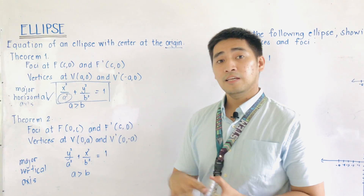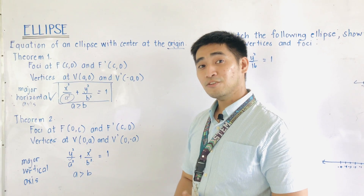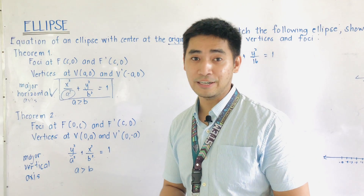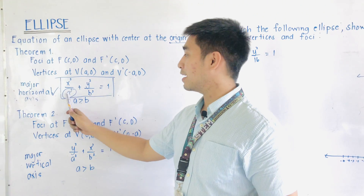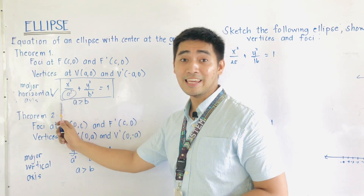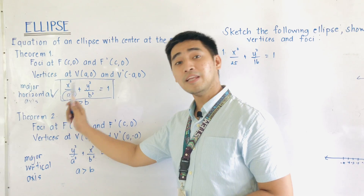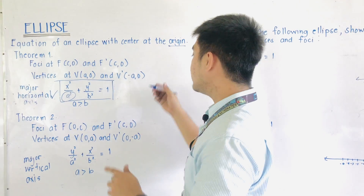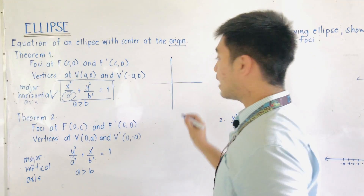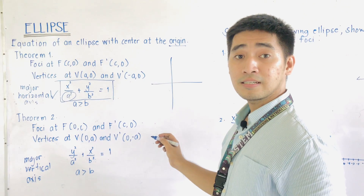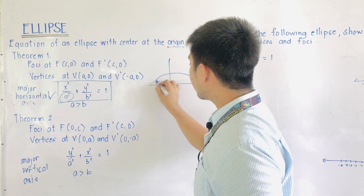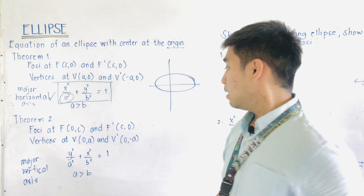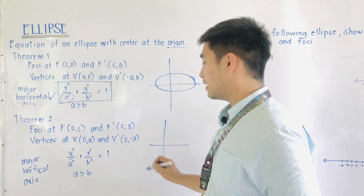The choice of theorem depends on which denominator is larger. For Theorem 1, since A is greater than B and A is the denominator of x squared, we call that major horizontal axis. This means the ellipse expands along the x-axis, so it will look wider horizontally.